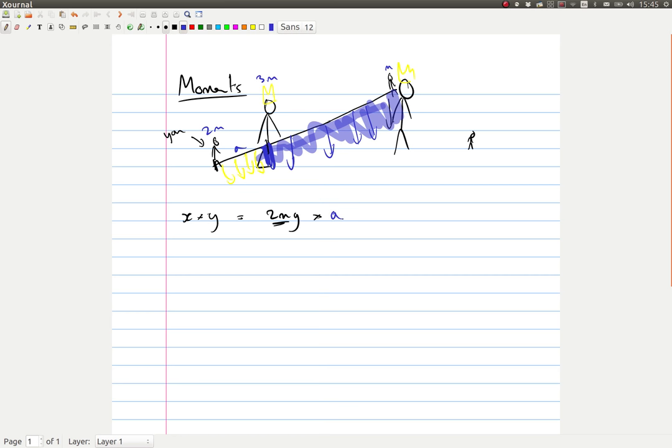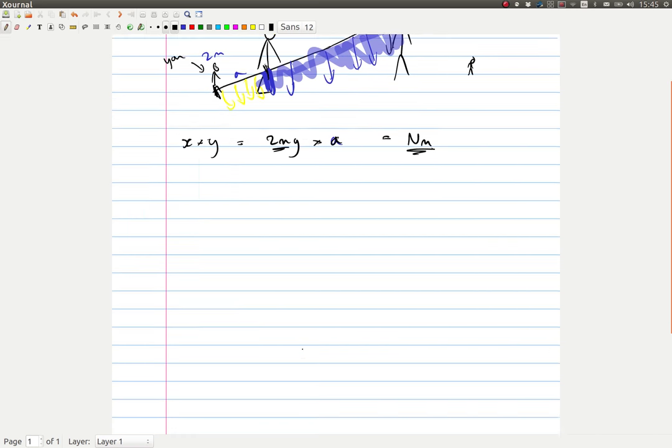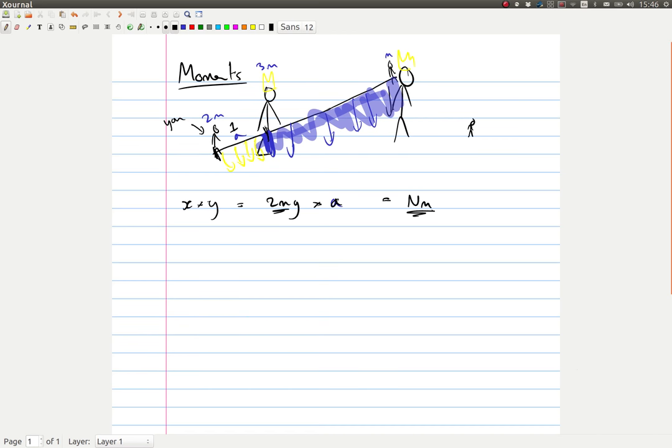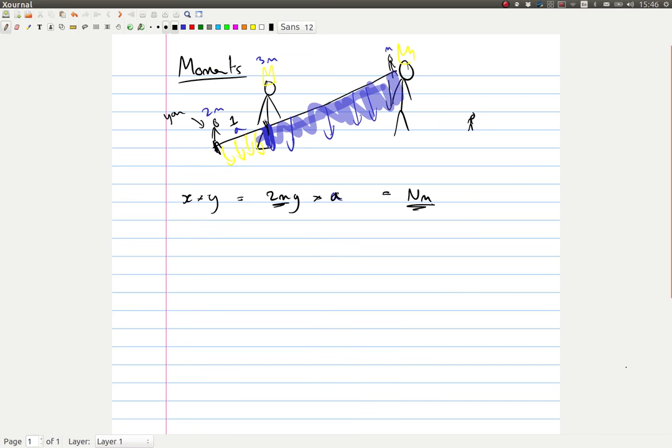Let's call this distance A, multiplying by A. This is called your moment. It's in the units newton meters. So how far away, if A is one meter, how far away does the little person need to be to balance you out on the seesaw?